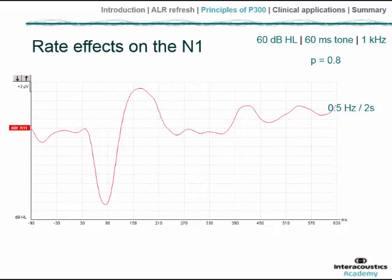Here we have a series of traces — just one here but I'll show others in a few seconds. These are traces evoked by the non-target, the standard stimulus, in an oddball stimulus setup. This is useful as a starting point for understanding the general effects of rate on the obligatory responses produced by the more probable, non-target tones.